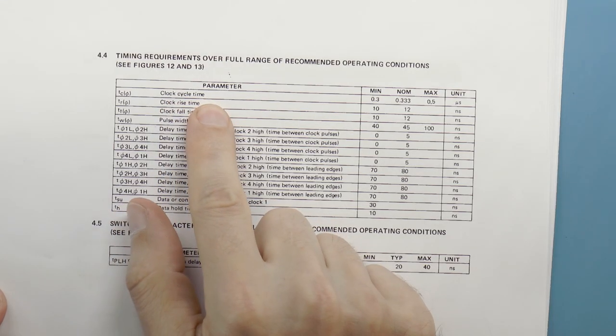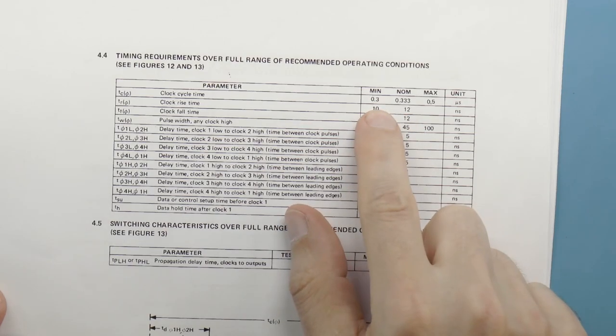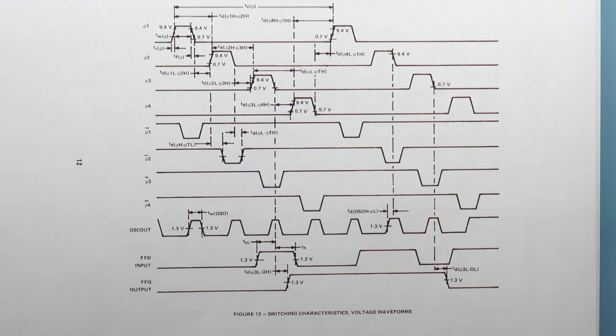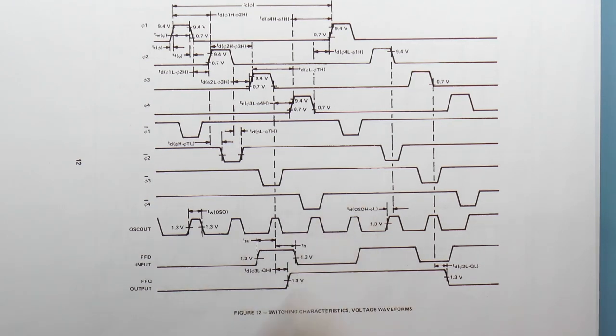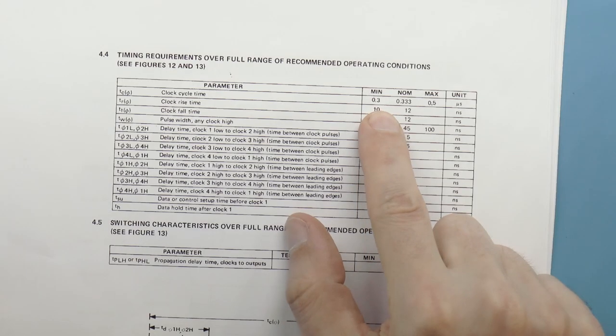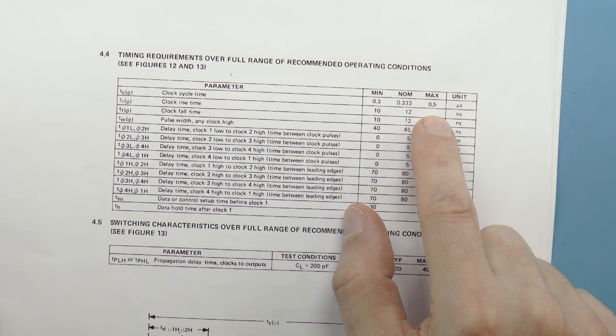For clocking, it can go up to 3.3 megahertz. However, it requires a four-phase clock, and the phases can't overlap. Oh, and the clock lines are 12 volts. And it has a minimum clock speed because it's dynamic logic and can't be single-stepped using the clock. Why am I doing this again?